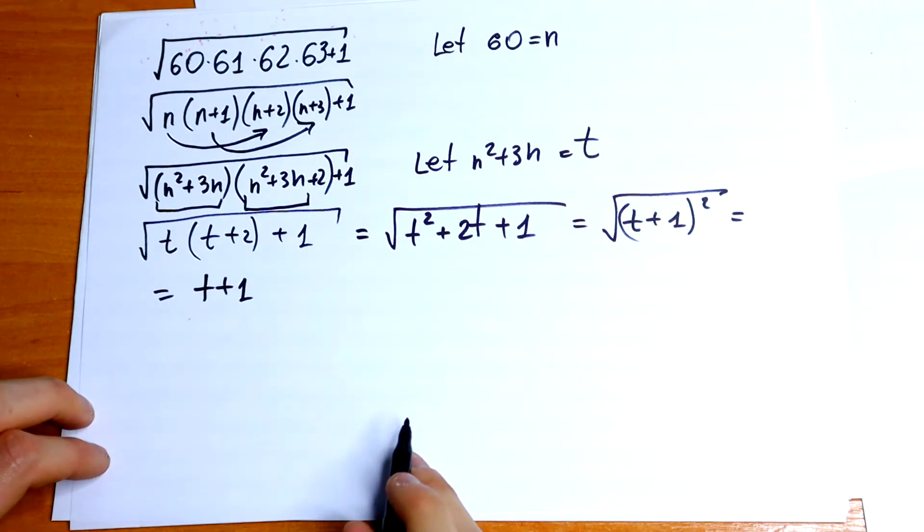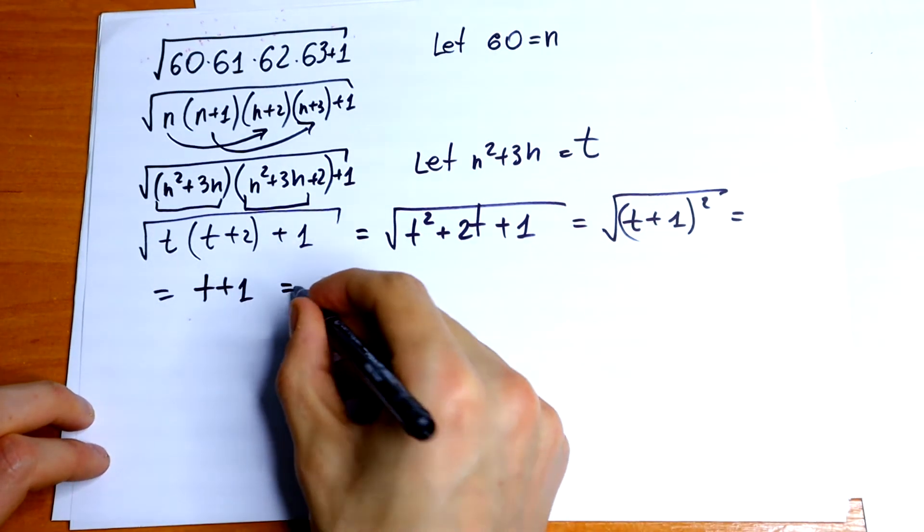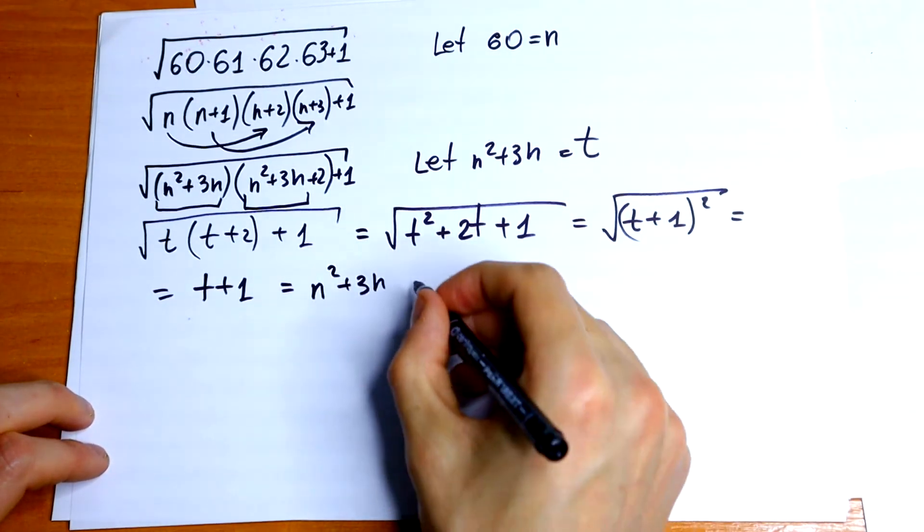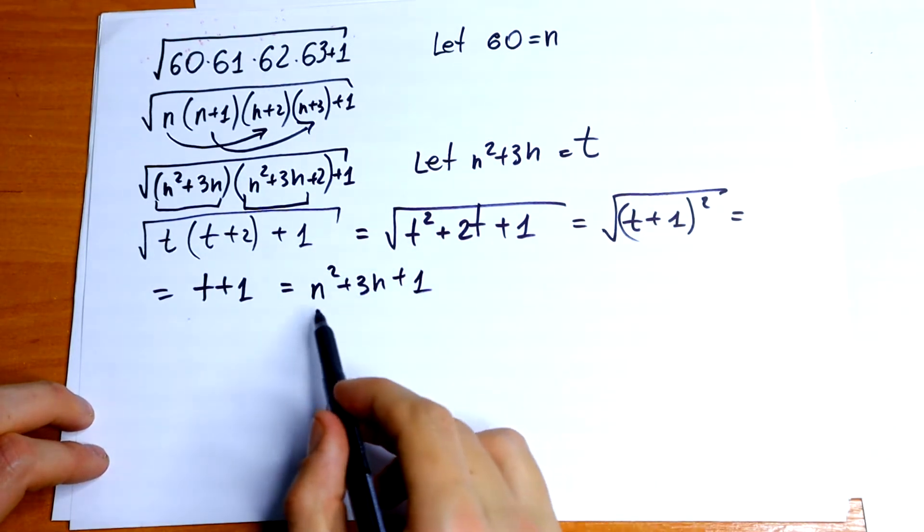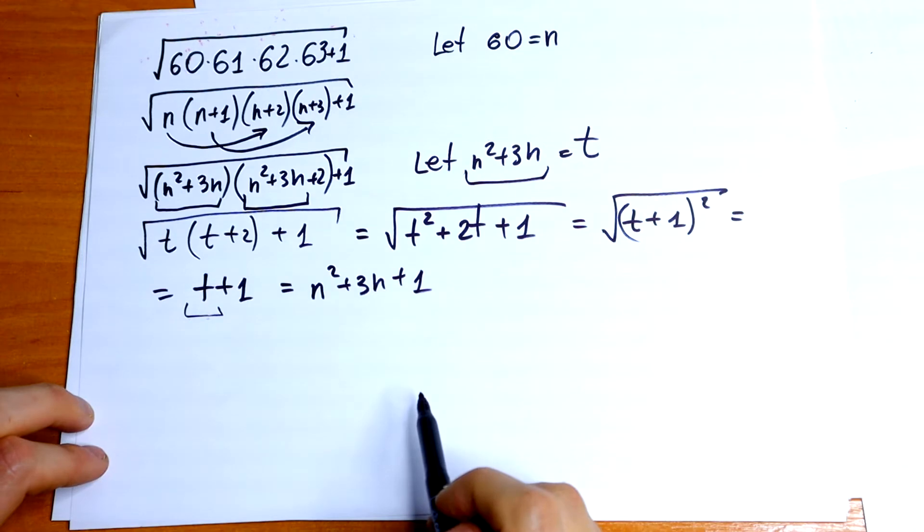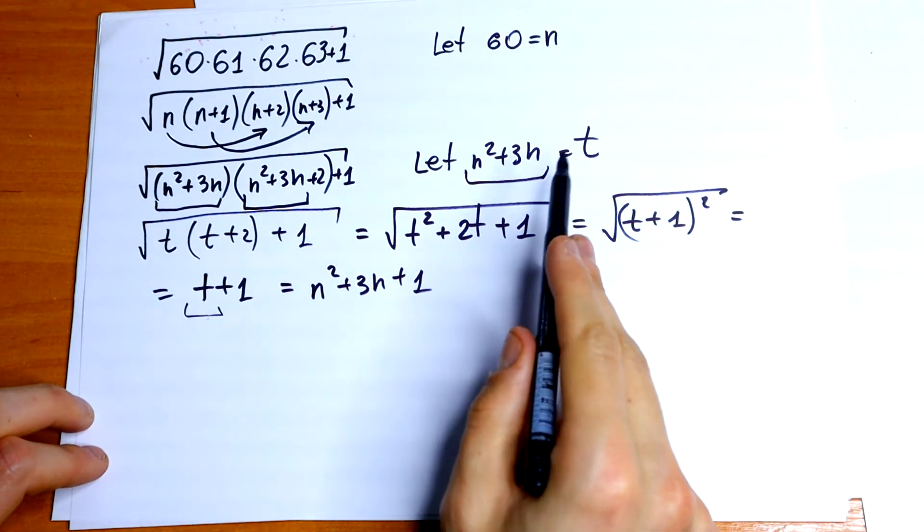Under this square root we will get t plus 1. So t is n square plus 3n and plus 1. Just instead of t we write this, I have a substitution.